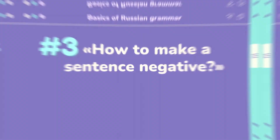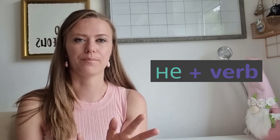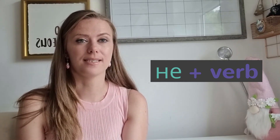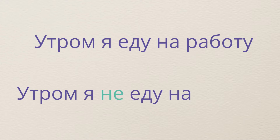If you want to know more about how to form plurals and the exceptions for determining the gender of a noun, make sure you refer to my other video where I explain everything in detail. The third category is how to form a negative sentence in Russian — and it is very easy. All you need to do is add the word 'не' in front of the verb. For example, 'Утром я еду на работу' becomes 'Утром я не еду на работу'.